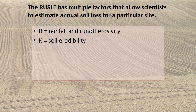K is the soil erodibility factor, which includes both how vulnerable the soil is to erosion and runoff. Soil textures such as clay-rich soils and coarsely textured soils contribute to low erosion rates. Organic matter reduces erodibility because it reduces susceptibility to detachment and increases infiltration, which decreases runoff. Permeability affects runoff.